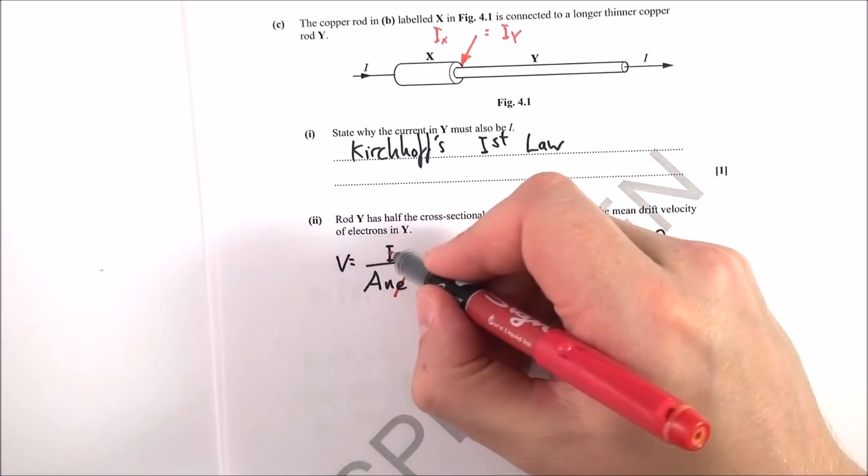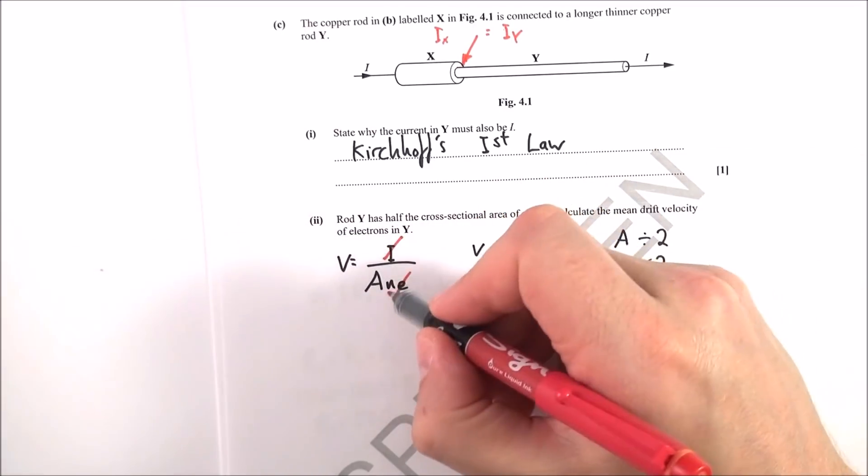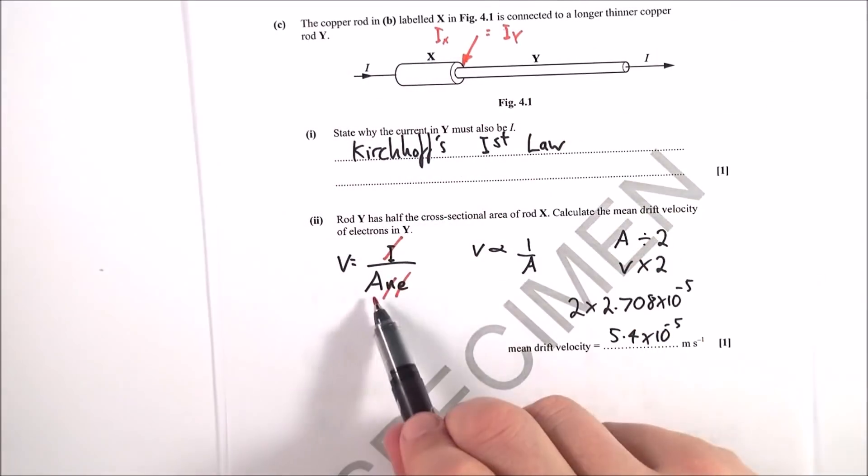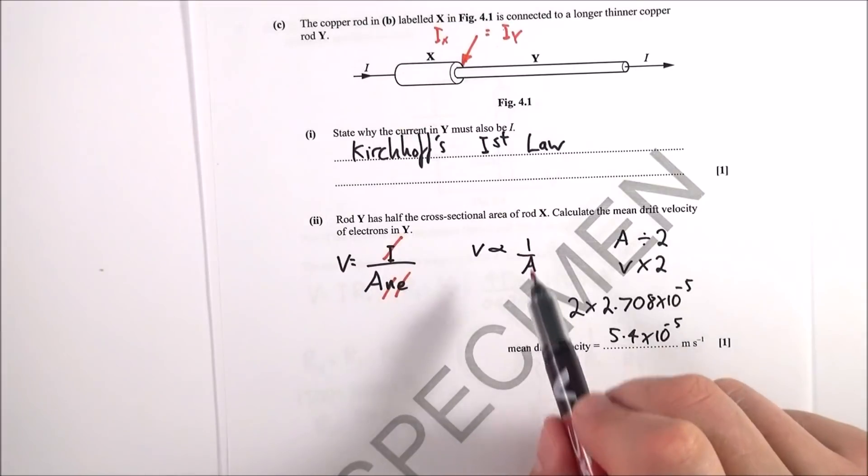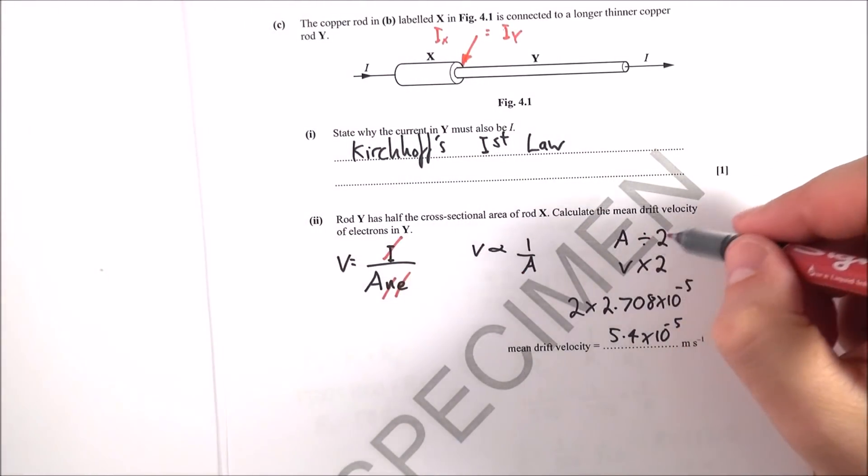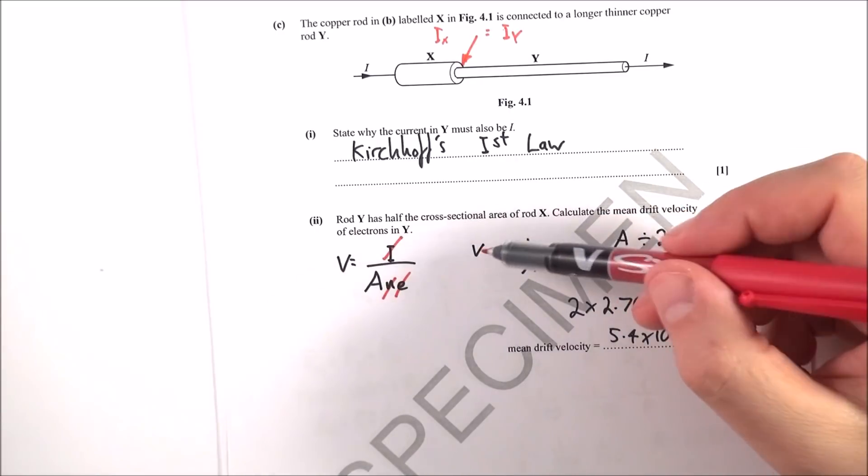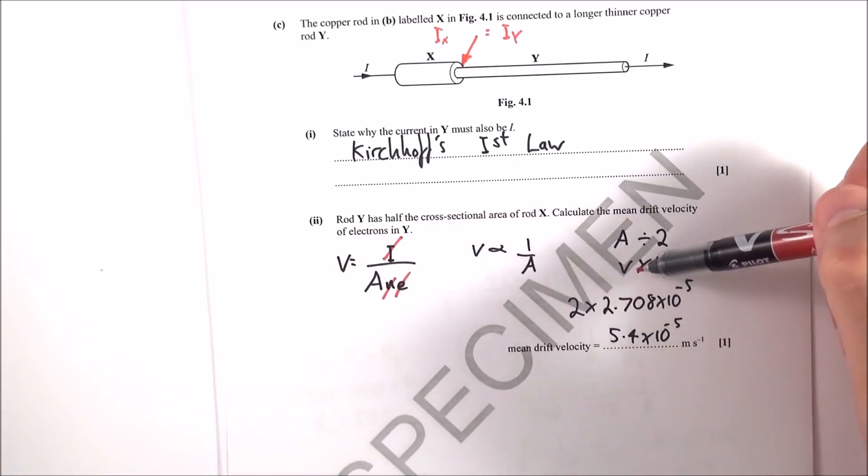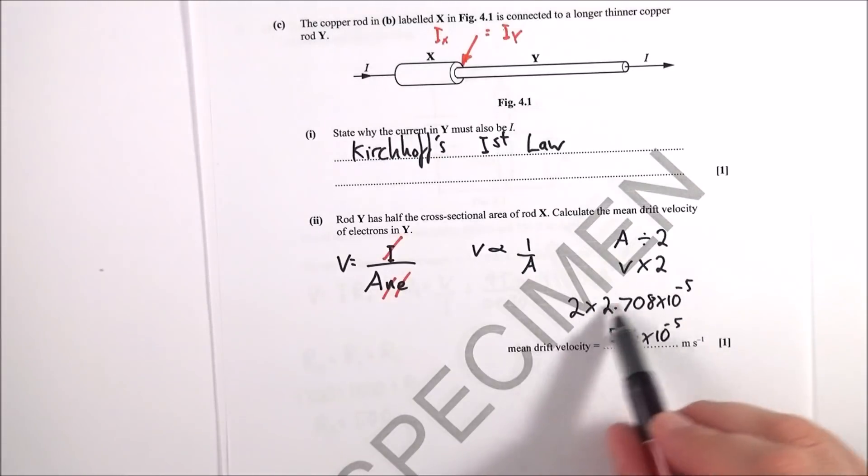charge on the electrons, you've got the same current, and you have the same number density because it's the same material, that means V is proportional to 1 over A. That means if the area goes down by a factor of 2, the drift velocity must go up by a factor of 2. And therefore I just doubled my previous answer.